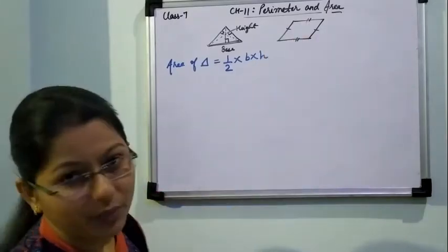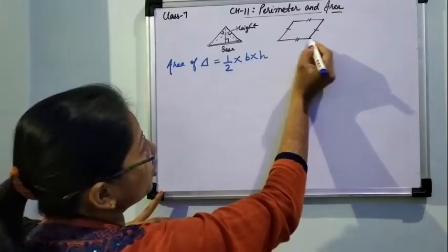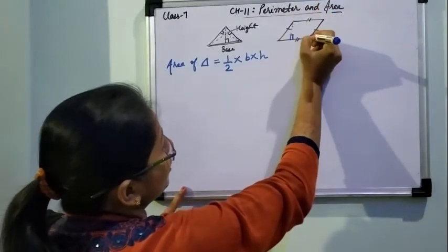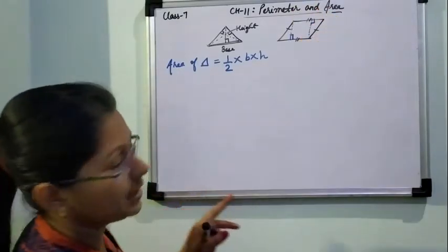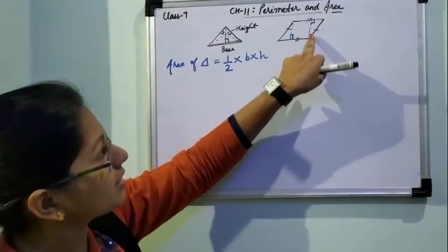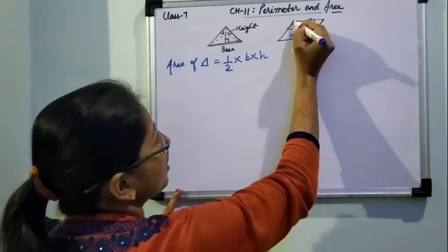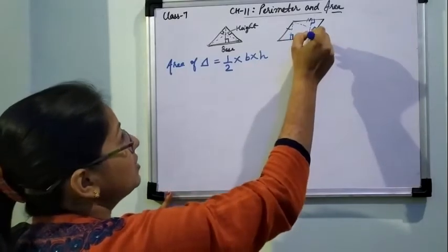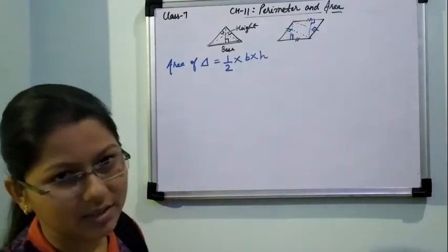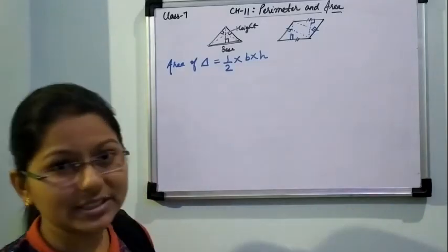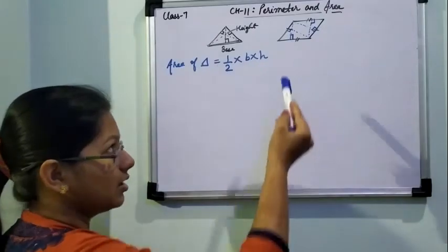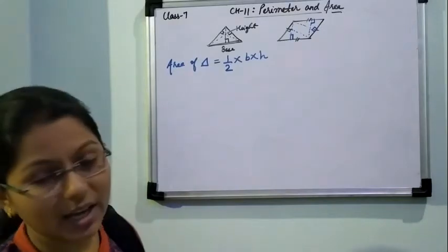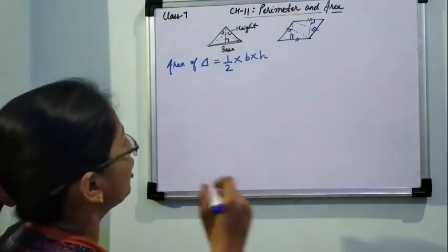For a parallelogram — if you look carefully, if I take this as the base, then this will be the height. If I take the upper side as the base, then this will be the height. So whichever side we take as base, the height will be drawn from the opposite side. The base we choose and the corresponding height will differ accordingly. It depends on us which base we want to take, as per what is given in the question.